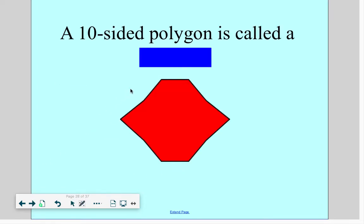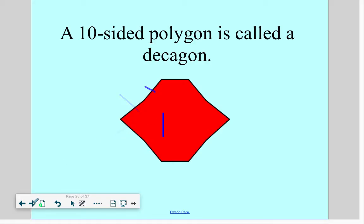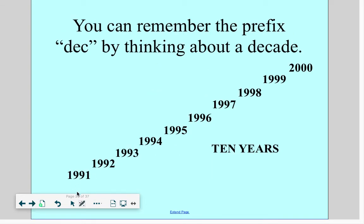A ten-sided polygon is called a decagon. The prefix deca means ten. A ten-sided shape. One, two, three, four, five, six, seven, eight, nine, ten. Ten-sided shape is called a decagon. Now, you can remember deca means ten because a decade is ten years long.